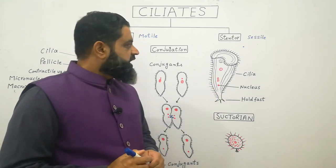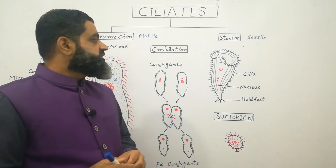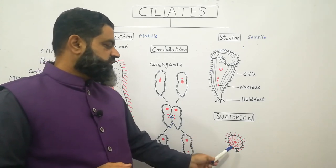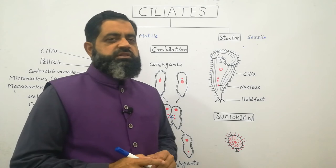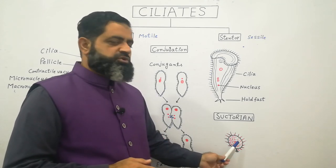The other example of sessile ciliates is known as suctoria. Suctoria are always attached with some substratum. They have cilia, cytoplasm, nucleus.